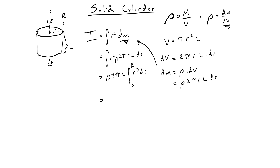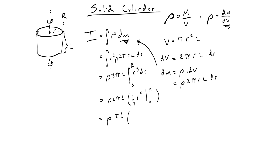With rho, 2 pi, l held constant, integrating r cubed gives one-fourth r to the fourth, evaluated from 0 to capital R. Combining the 2 and the 4 gives 2 over 4, which simplifies to one-half. Evaluating at capital R gives R to the fourth, and at 0 gives 0, so that term drops out.